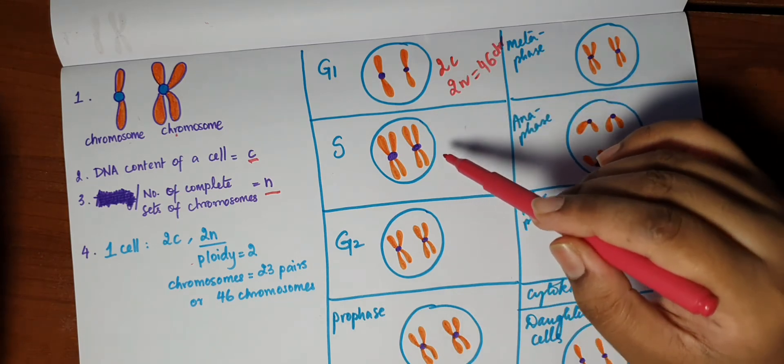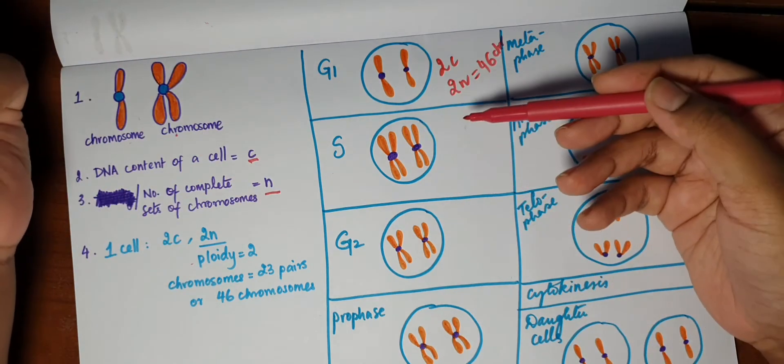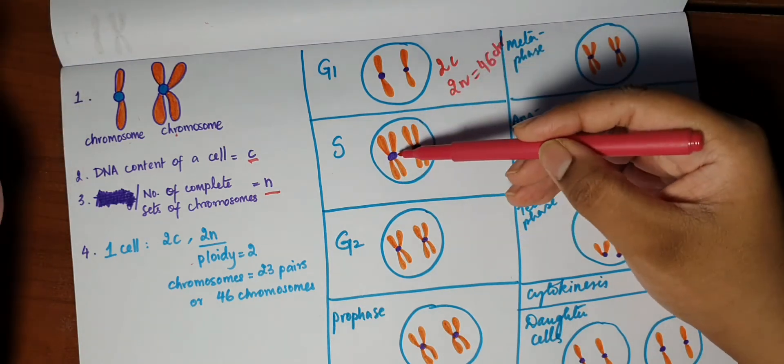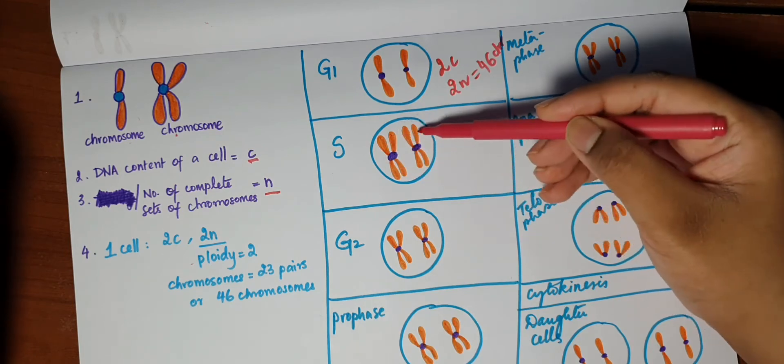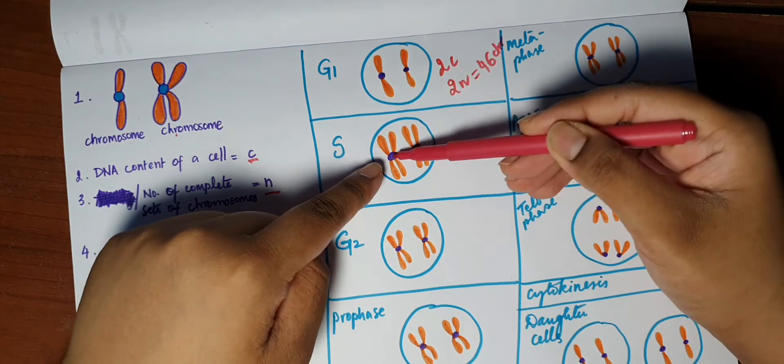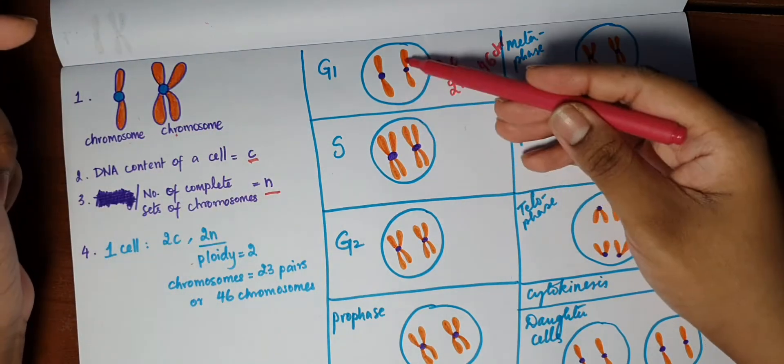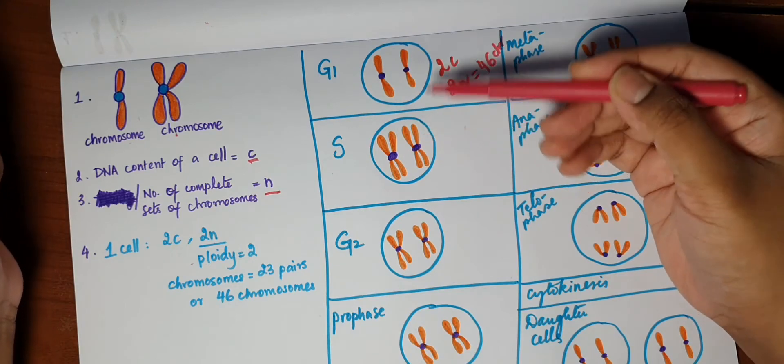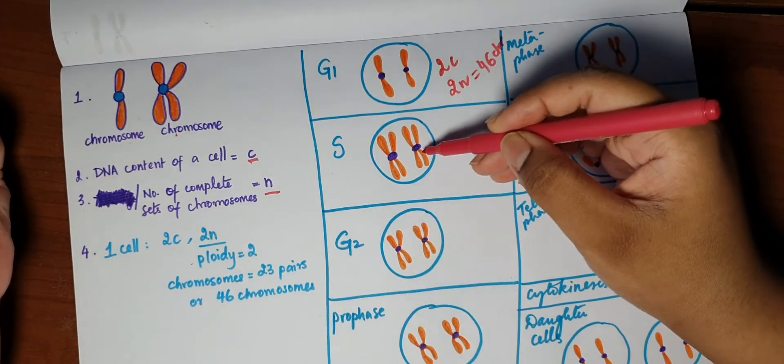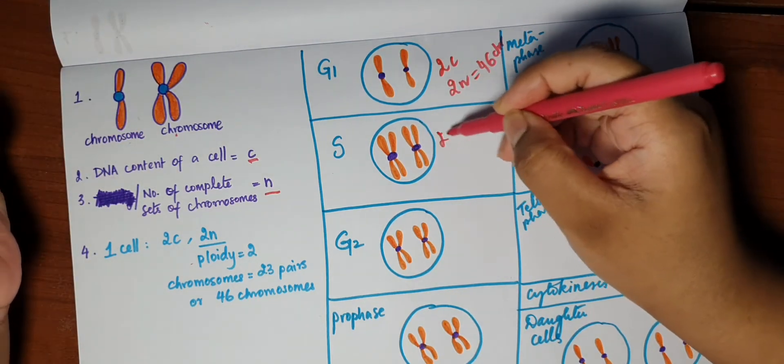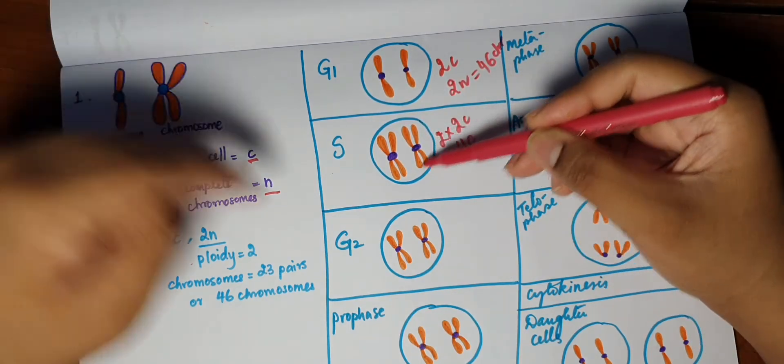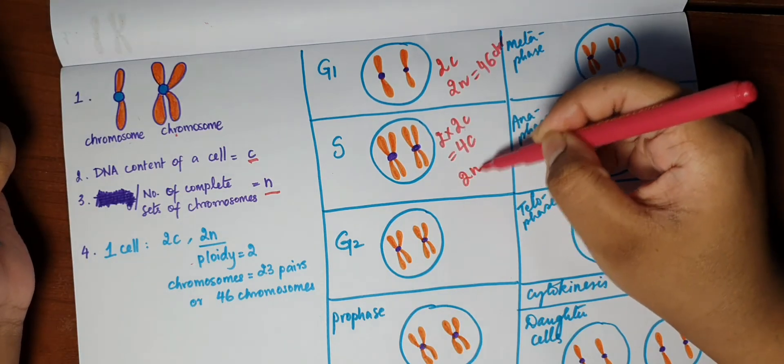Now in S phase, there is replication of DNA, meaning the content has doubled. But as you can see here, this is one chromosome, this is another chromosome. Even though the chromatids have replicated, they are still attached at the same centromere. So the number of chromosomes is the same as G1 but the amount of content has doubled. So the amount of content now would be 2 into 2c. So we have 4c amount of DNA and the number of chromosomes is the same, 2n amount of chromosomes.